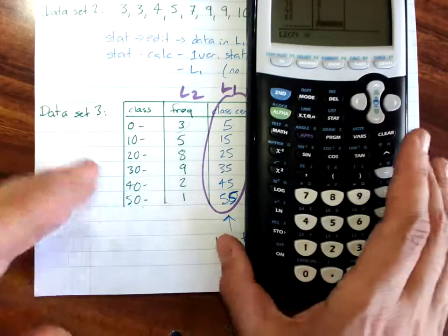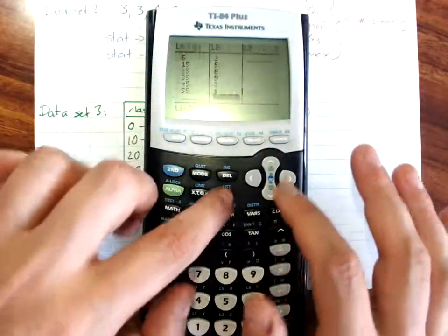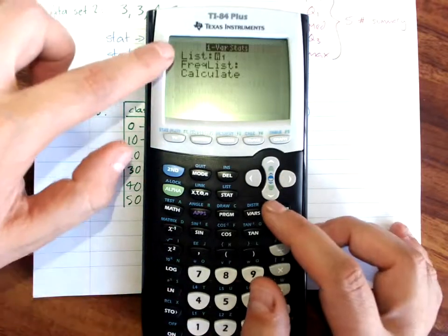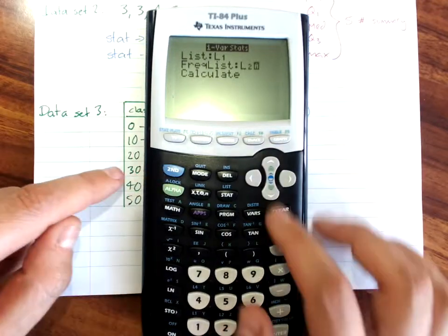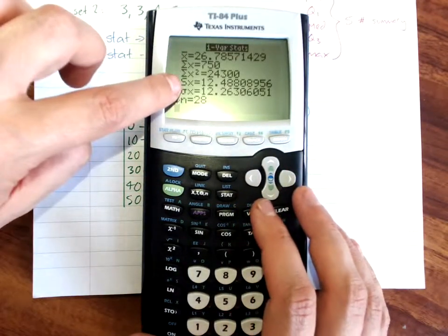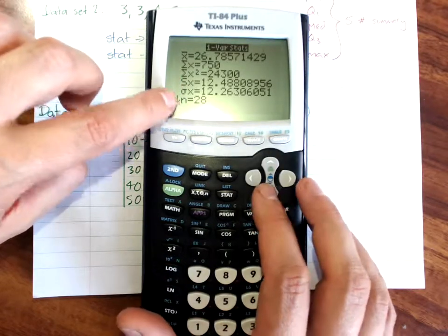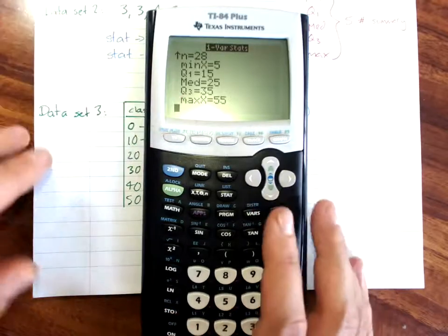Then our frequency. And then we get it exactly the same way as for a frequency table. Stat, calc, one variable stats. L1 is our data, L2 is our frequency, and calculate. Mean, standard deviation, number of scores, five number summary, and all the parts of that.